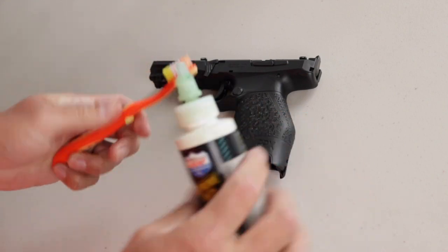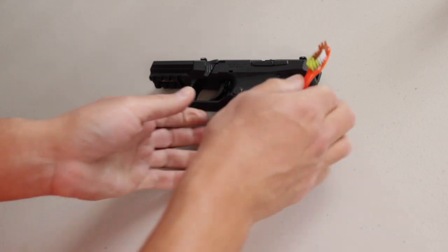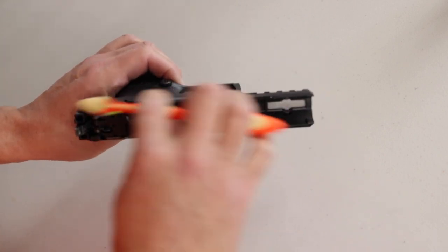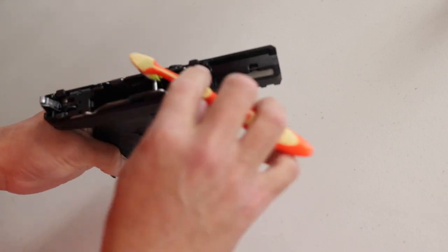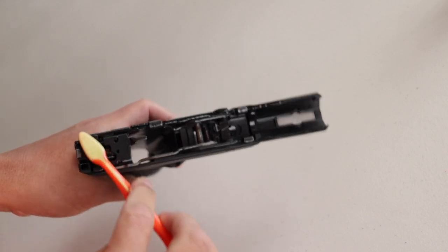Add CLP to a nylon brush and start scrubbing the frame inside and out, all surfaces. And don't worry about leaving any excess CLP or anything slippery on the outside of the frame. You're going to wipe all of that off. The outside of the frame is going to be totally dry when you're done. You just want to get off all the dirt and fouling for now.